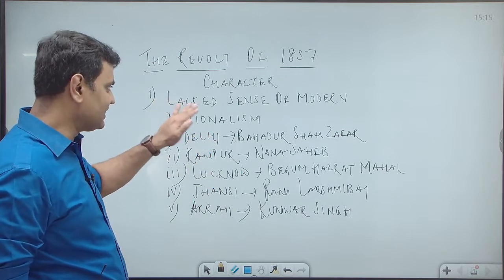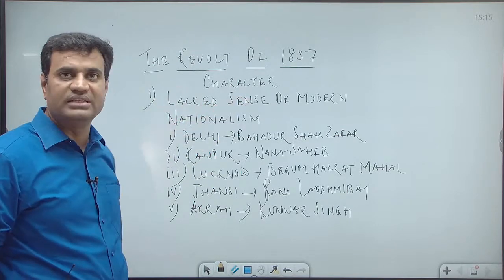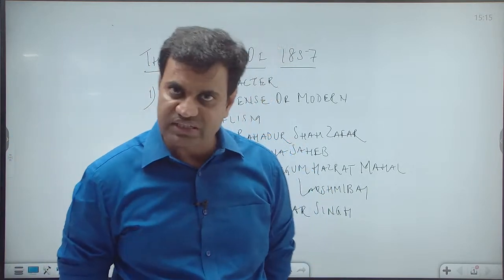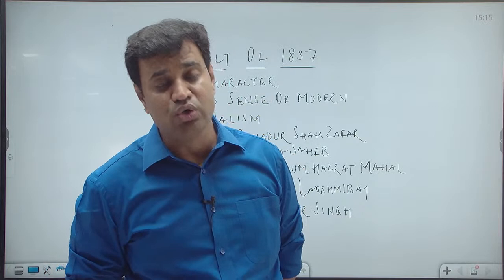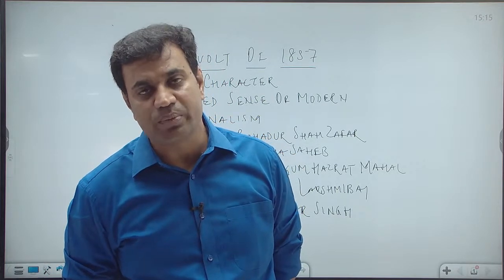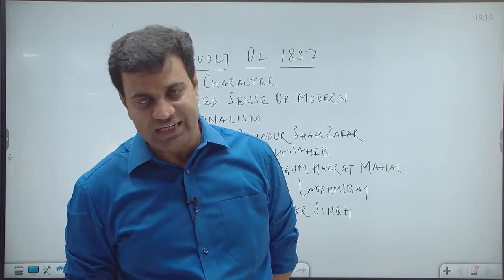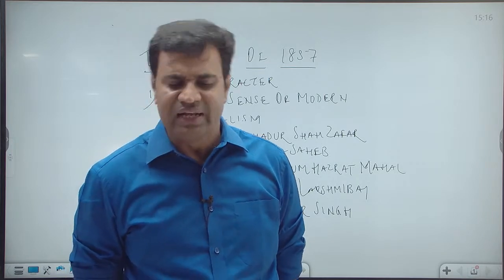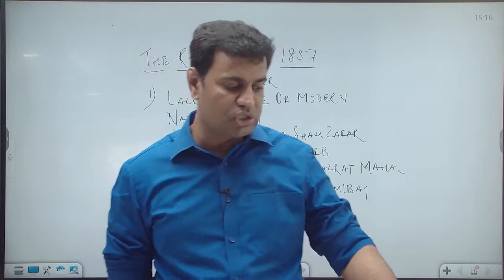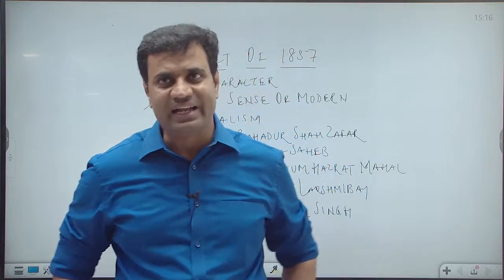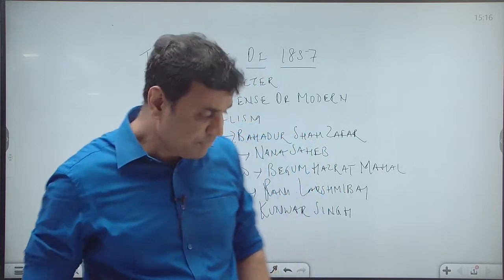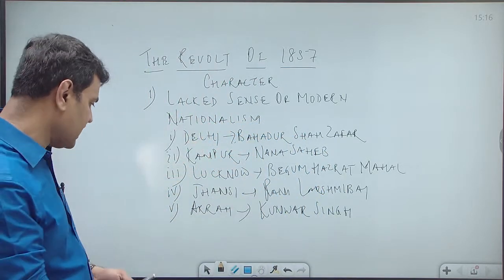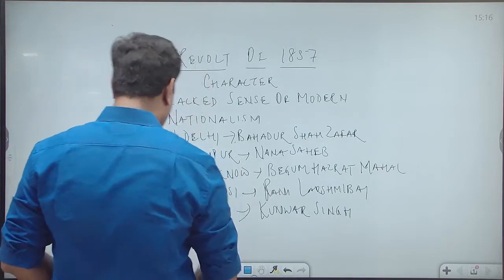Since none of the leaders came forward to present a well-coordinated plan of action against the British, this itself became a major factor for easy suppression of the revolt. After its suppression, educated Indians decided that India first needed to be converted into a nation, and they began to arouse nationalism in the second half of the 19th century, marking the beginning of the Indian National Movement.